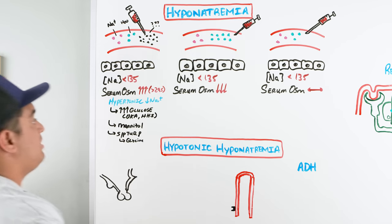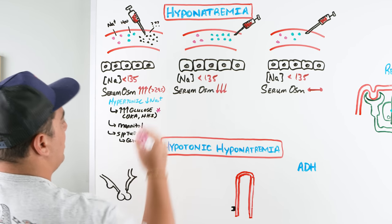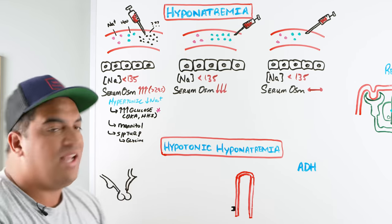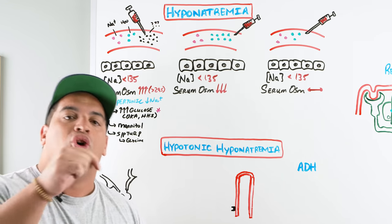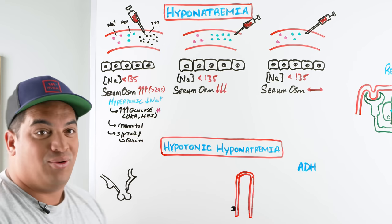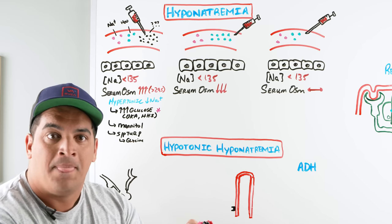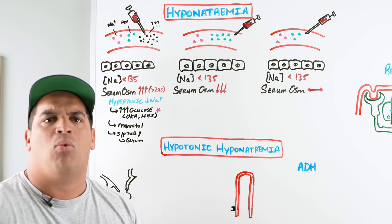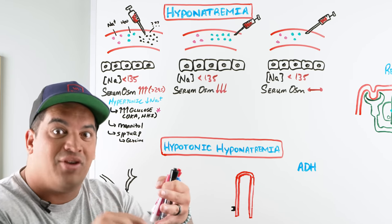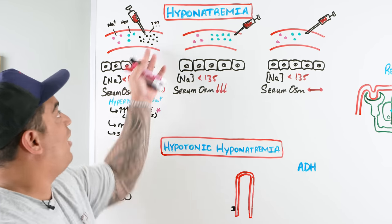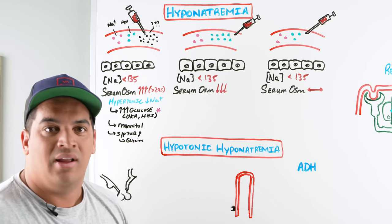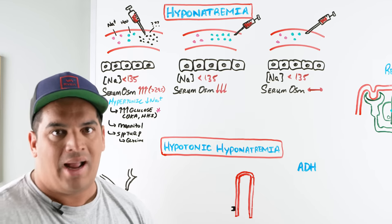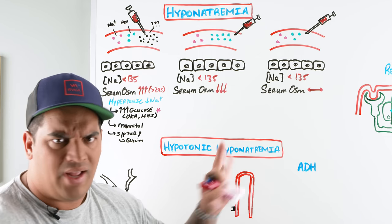For example, if a patient has a glucose of 300 and sodium of 132, plugging it into the sodium correction calculator may give you a normal sodium after correcting for the hyperglycemia. So make sure you always do the sodium correction for hyperglycemia if it's a confounding factor.